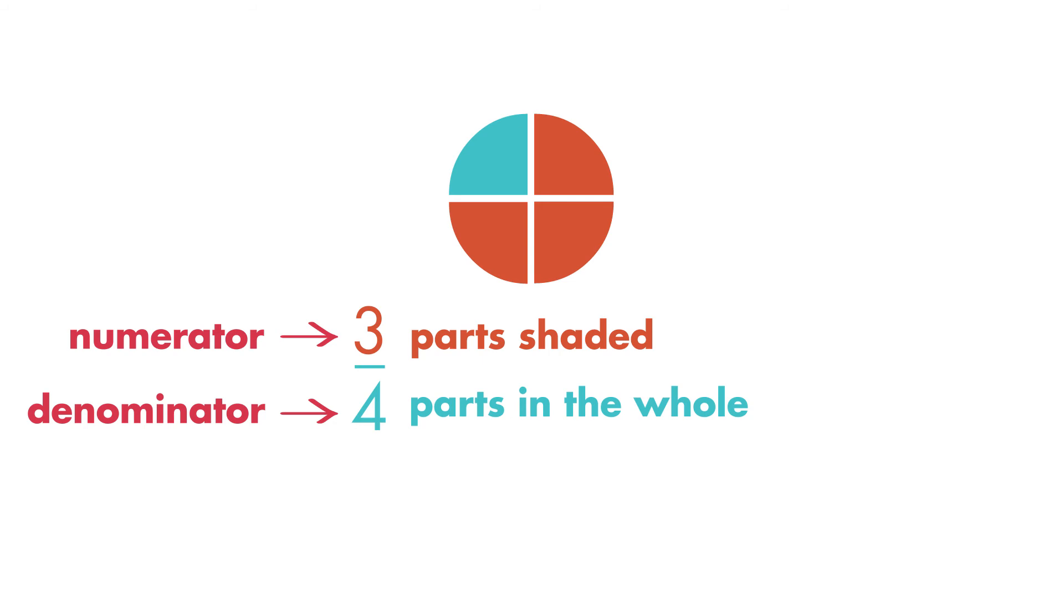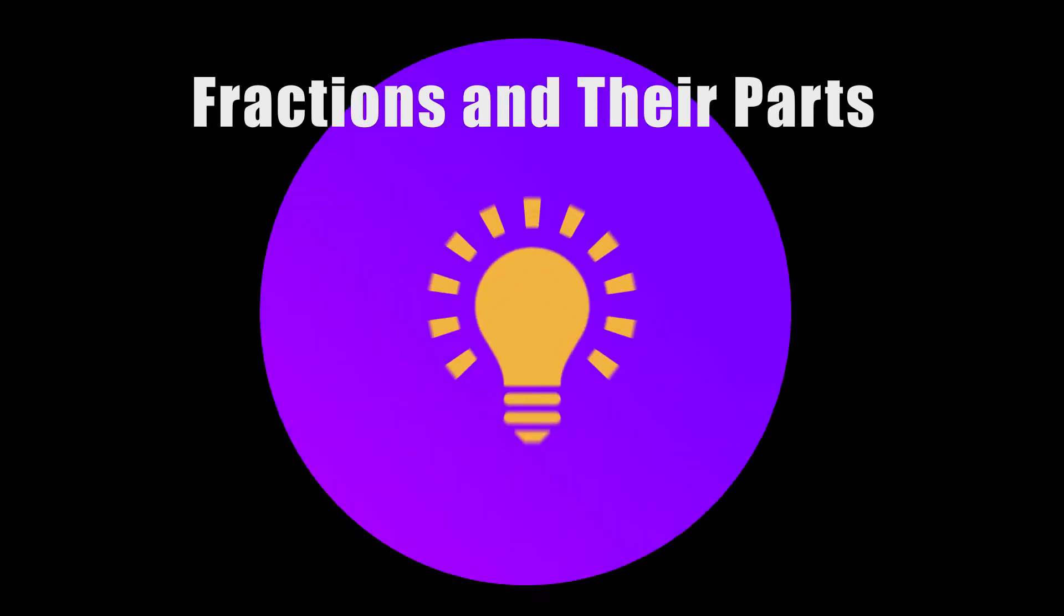This fraction is read as three-fourths. Three-fourths of the circle is shaded. Now you know how to use fractions to name parts of a whole.